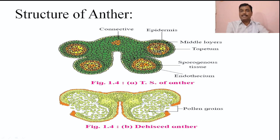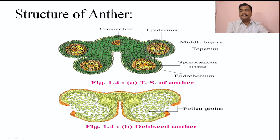When the anther gets mature, the pollen grains are released; that process is known as dehiscence of the pollen grains. At that time the endothecium plays an important role — it is hygroscopic and can absorb or release water. At the time of dehiscence, the anther wall gets burst due to the endothecium: the two anther lobes merge with each other and the endothecium layer bursts open to release the pollen grains.